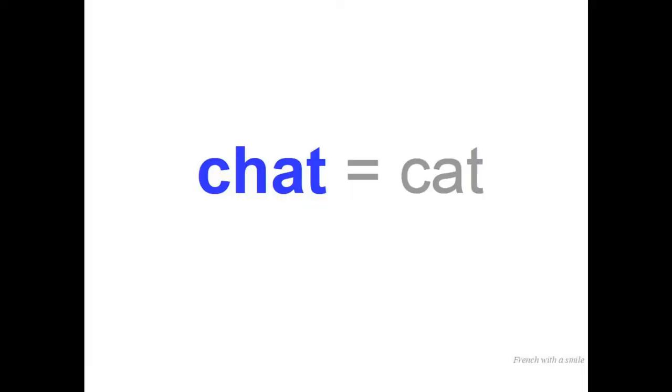Let's start with a noun. In French, we have masculine and feminine — we don't have a neutral gender like the German language has. Let's start with a masculine word. This means cat and we pronounce it: chat. Chat.